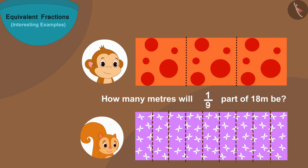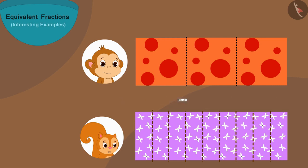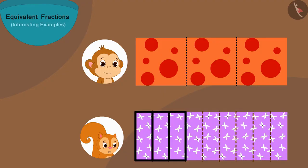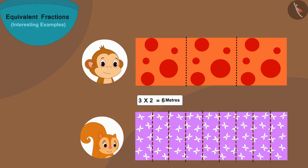So how many meters will the length of one part be? How many meters will one-ninth part of 18 meters be? Two meters. But Chanda has given Babban three-ninth part, or three parts out of nine. In this way Chanda has given Babban three times two, or six meters long cloth.